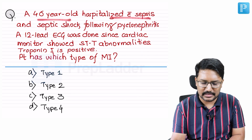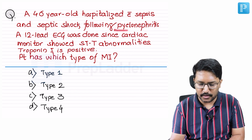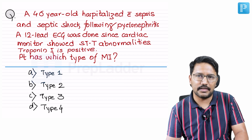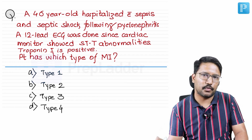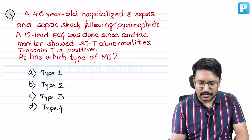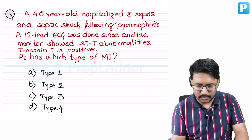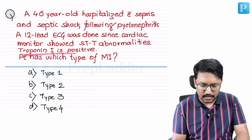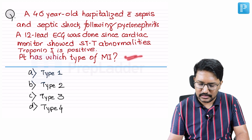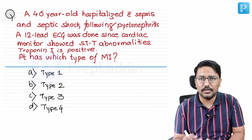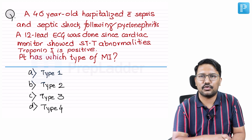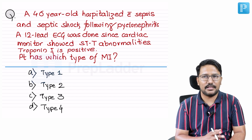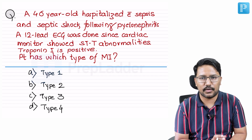A 46-year-old patient is hospitalized with sepsis and septic shock following pyelonephritis. These sepsis patients are at increased risk of stroke and coronary events during hospitalization and the immediate post-hospitalization period. A 12-lead ECG was done on cardiac monitor, troponin I is also positive. The question is asking: which type of myocardial infarction is this? This is not simply about NSTEMI or STEMI. Let me assume there are ST-T changes suggestive of myocardial infarction.